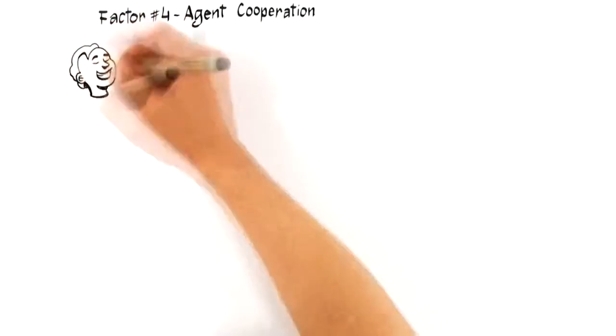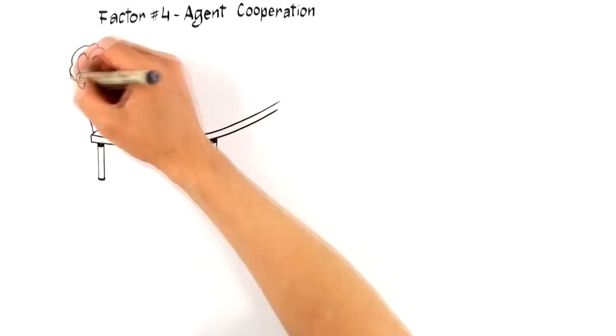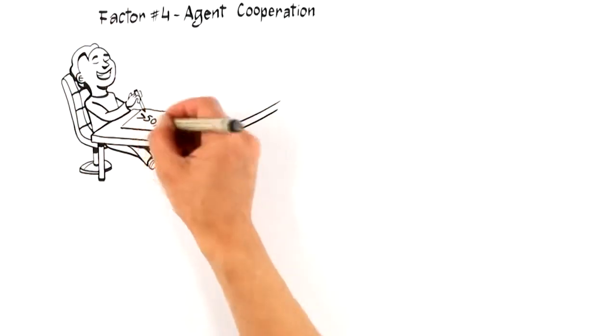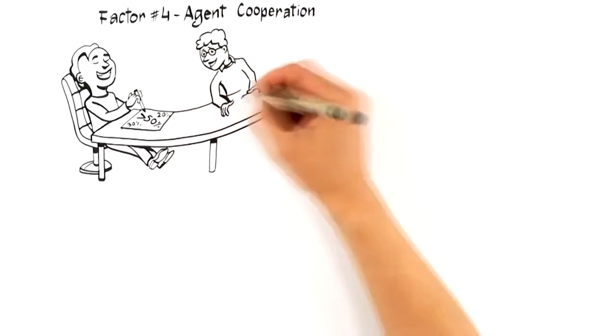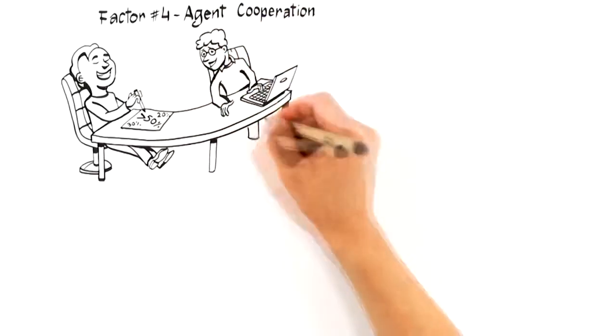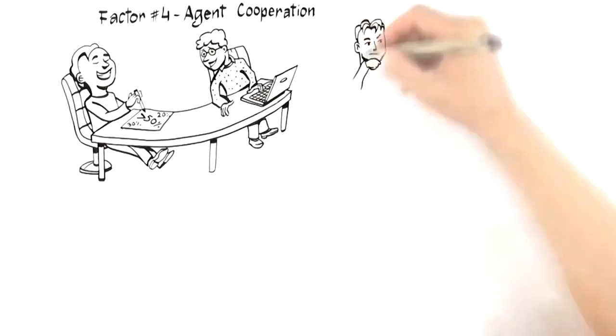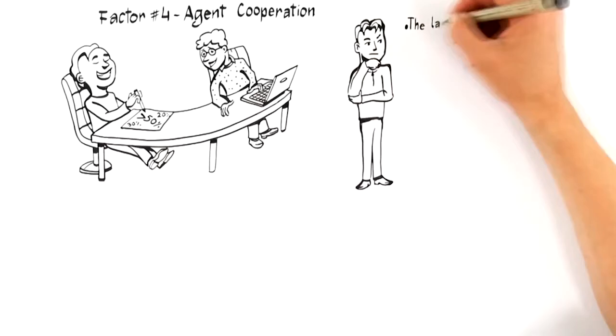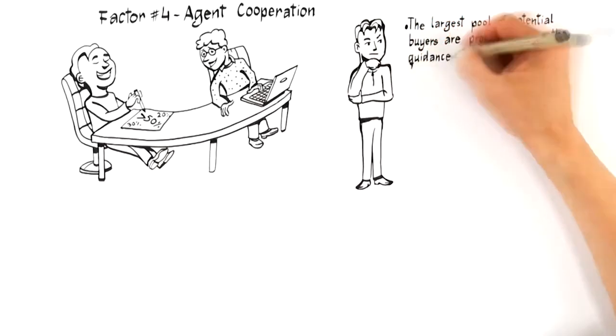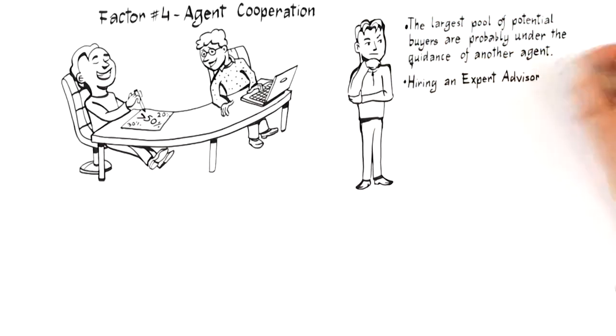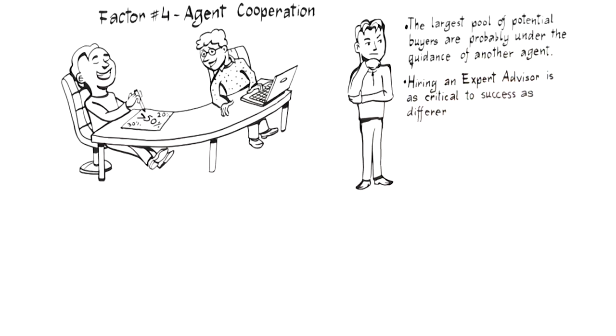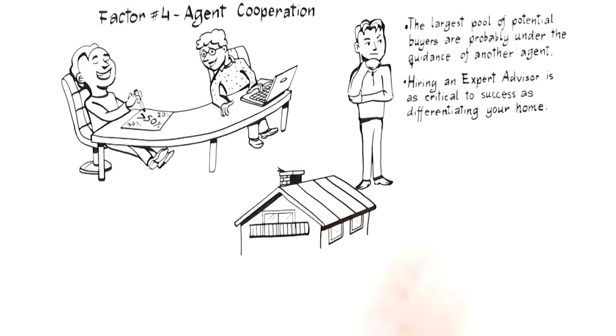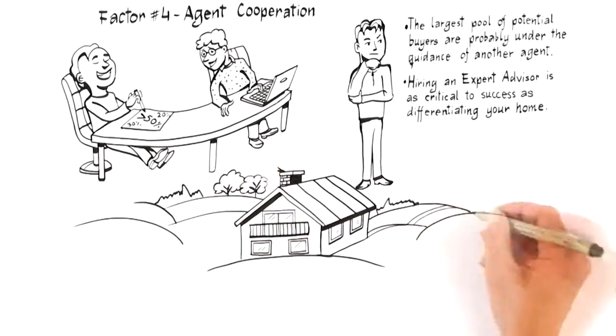Agent cooperation. Agent cooperation simply predicts that there is a greater than 50% chance that once your home is exposed to the market, another real estate professional will bring you a buyer. Since the largest pool of potential buyers are probably under the guidance of another agent, it's critical that your expert advisor allocate a portion of their marketing budget to get your home in front of the top agents in the market who represent buyers. This means hiring an expert advisor who understands the current incentives that motivate other agents to bring their best clients is as critical to success as differentiating your home is to attract targeted buyers.